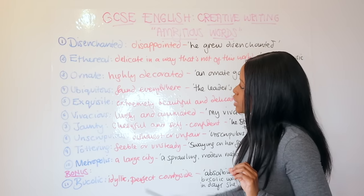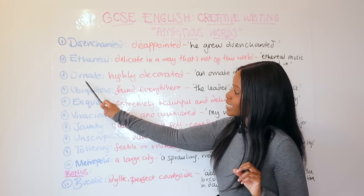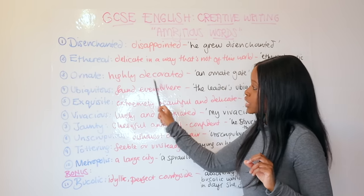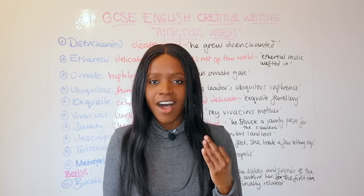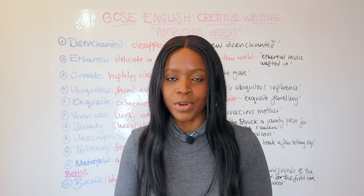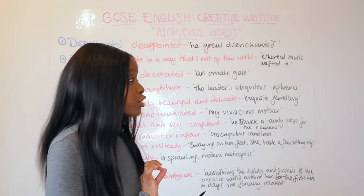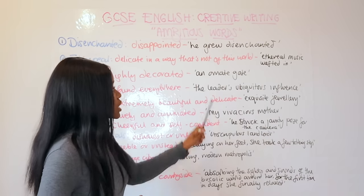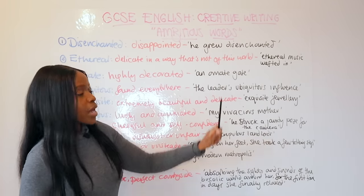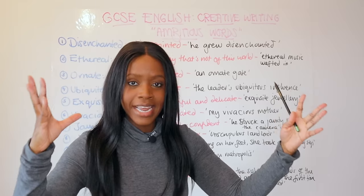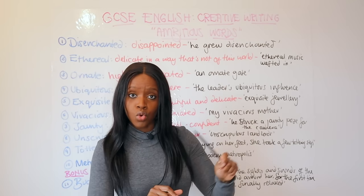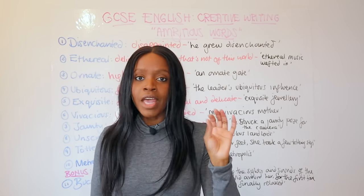The third ambitious word is 'ornate,' which simply means something that is highly decorated. You can describe an ornate gate, an ornate entrance, or even an ornate door.